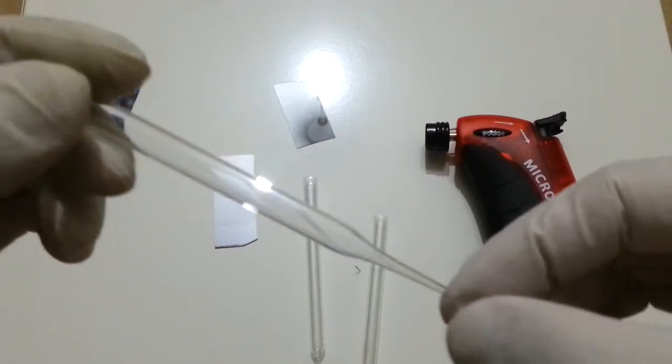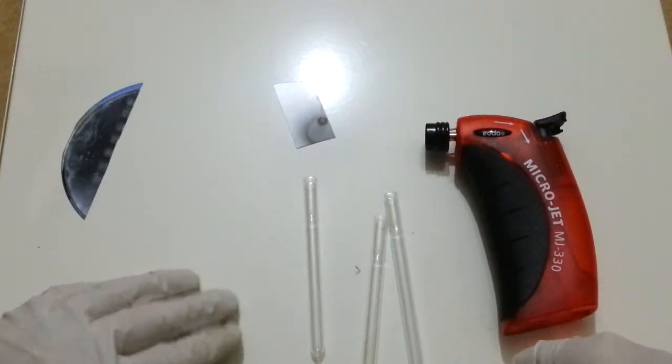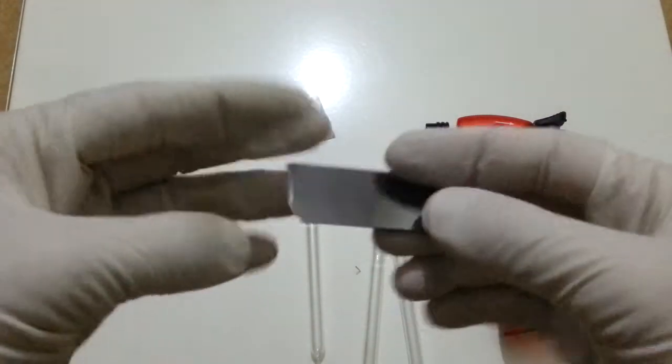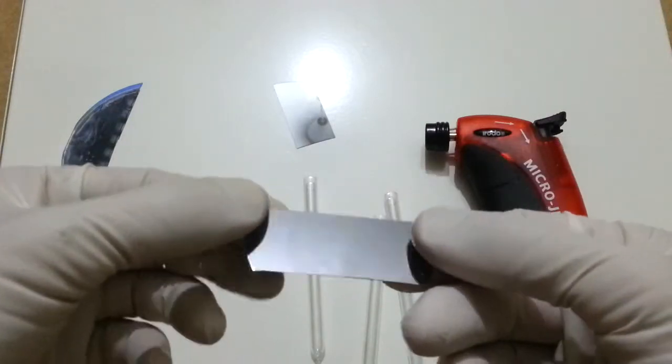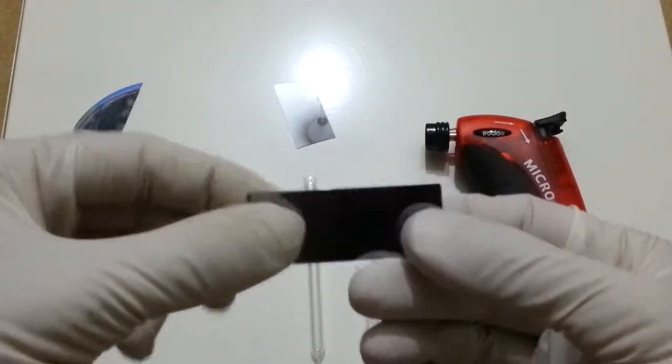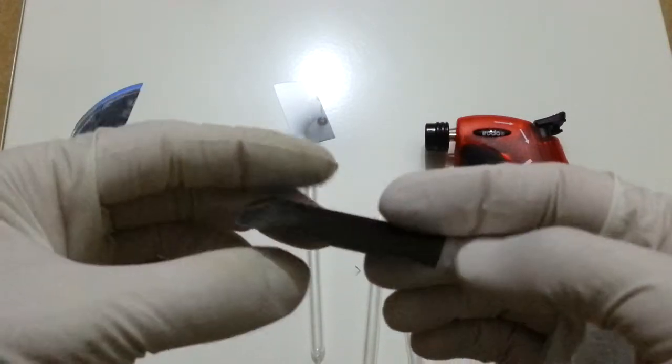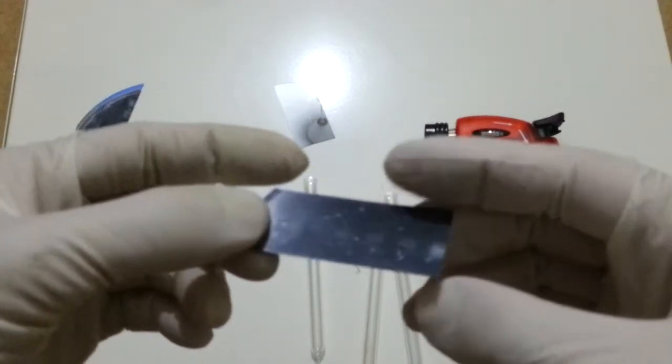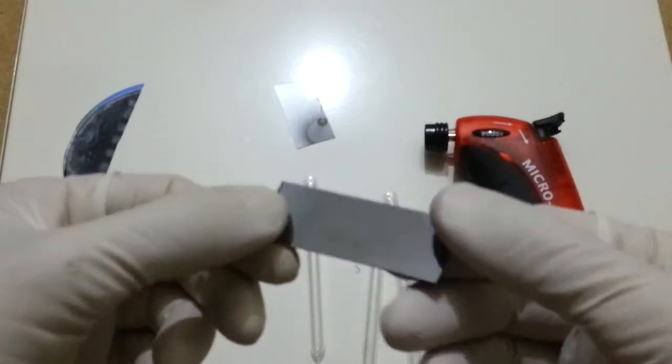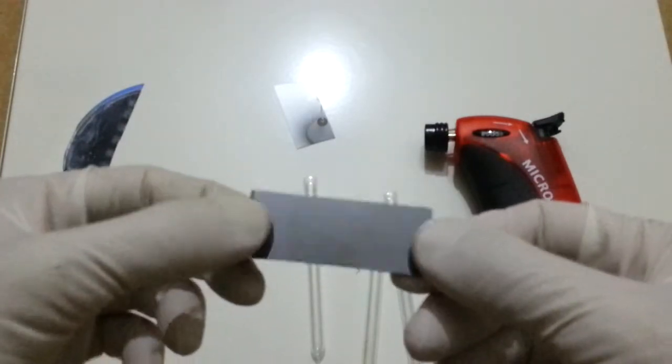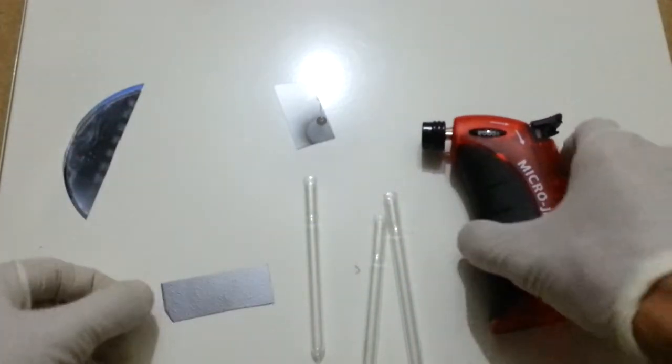You will need a diamond tip or a discarded piece of silicon wafer. This works just fine, costs nothing—of course it is trash—but it can cut the glass. Silicon is much harder than glass.